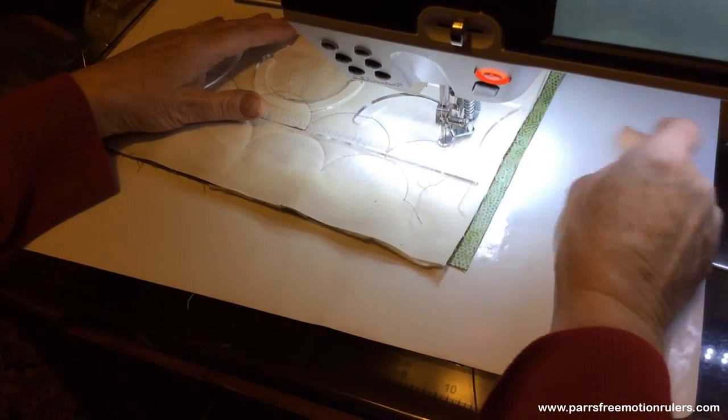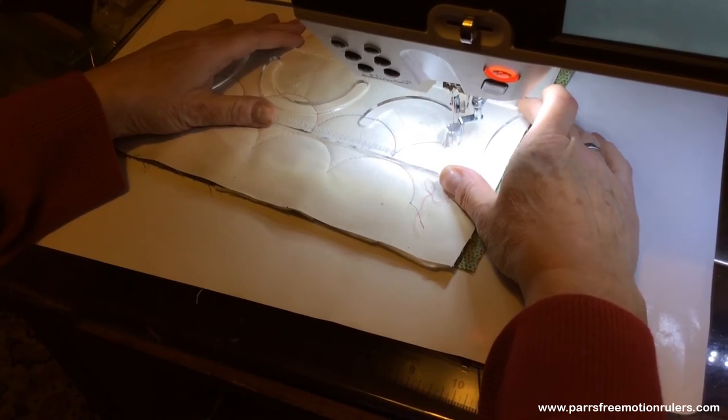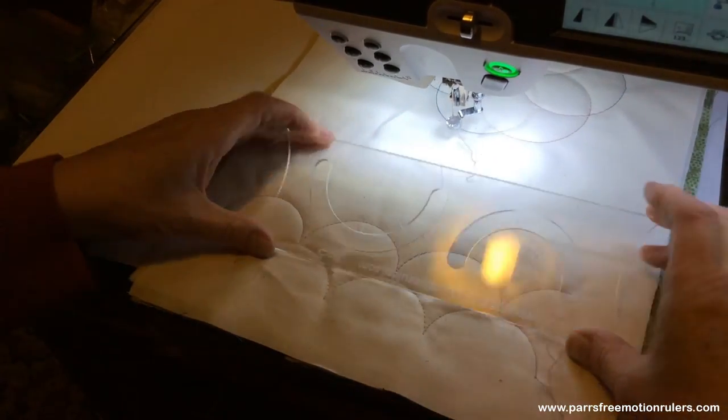That gives you your clamshells, perfect circles. You can make petals with this as well, but I'll show you that in a later tutorial.